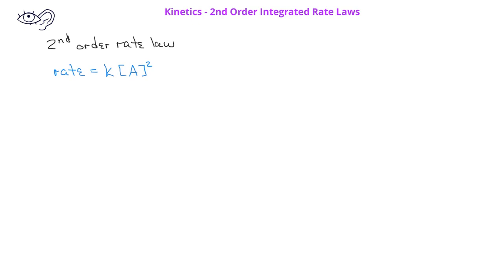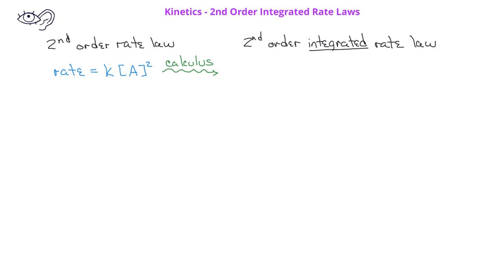You should know that the second order rate law takes the form of rate equals k times the concentration of A squared. If we do a little calculus on the second order rate law, we get the second order integrated rate law, which takes the form: the reciprocal of the concentration of A at time t is equal to kt plus the reciprocal of the concentration of A at time zero.